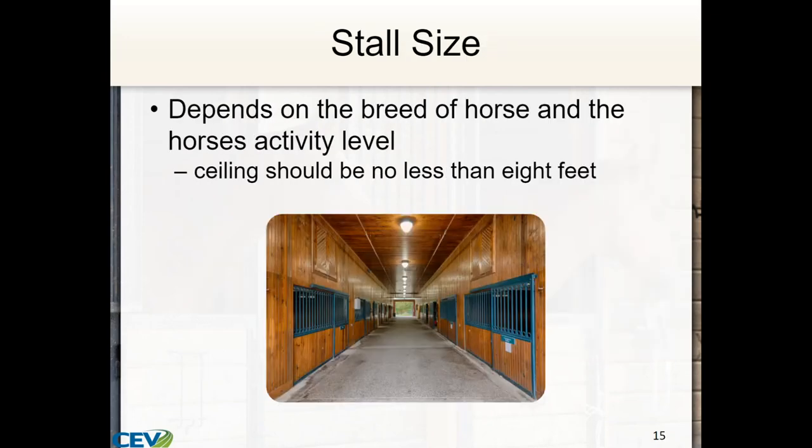Stall size depends on your breed of horse and the horse's activity. Your ceiling should be no less than eight feet — that's an awfully short ceiling. A 10 to 12 foot ceiling is preferred, just so that if they rear back, there's no chance they're going to hit a light or anything of that nature.